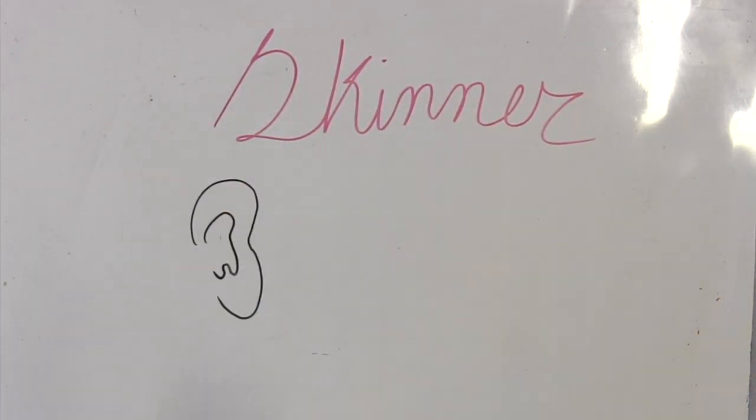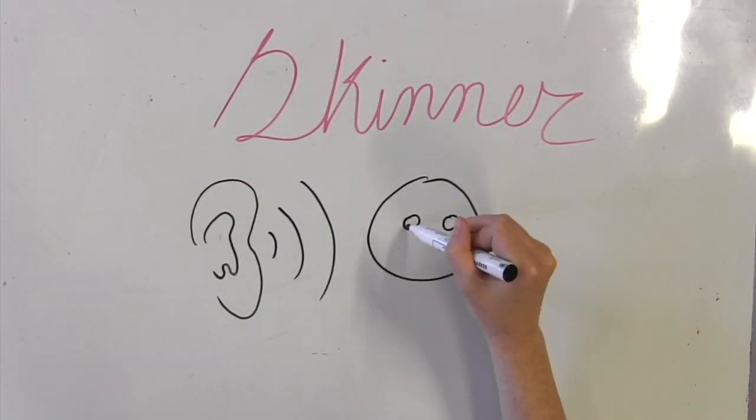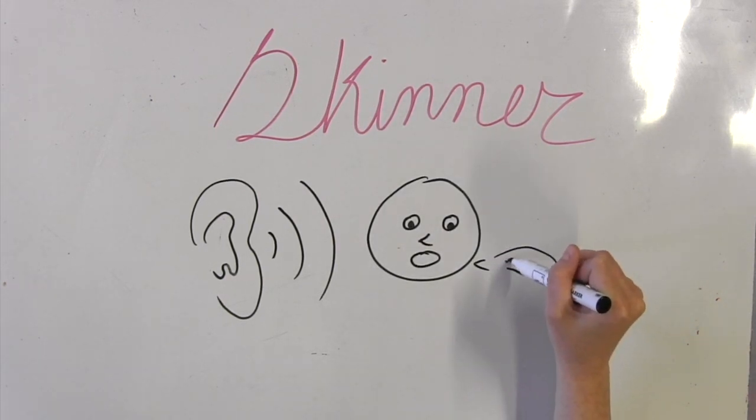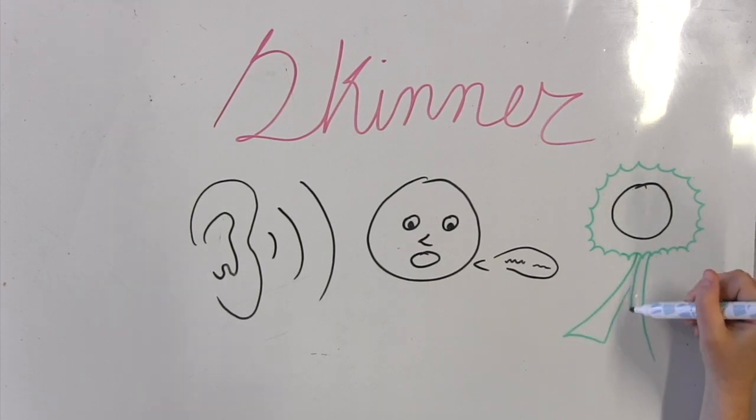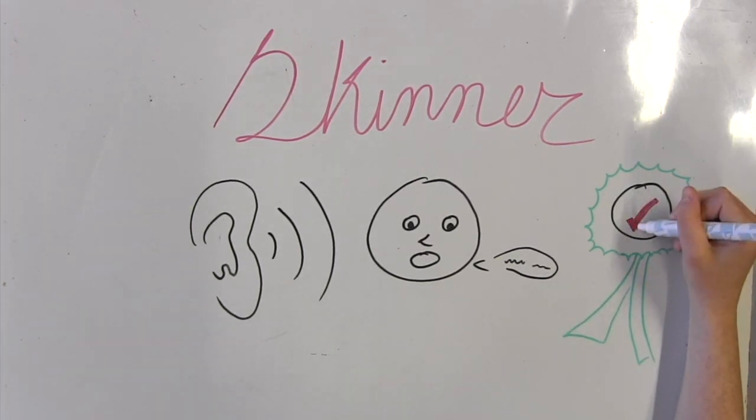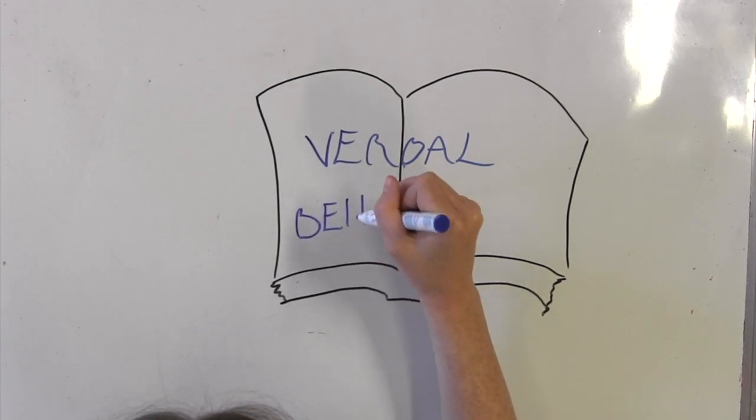But another linguist called Skinner had another theory about how children learn language. He thought that through hearing, repeating, and being rewarded, a child could learn a language. He wrote a book called Verbal Behavior about this.